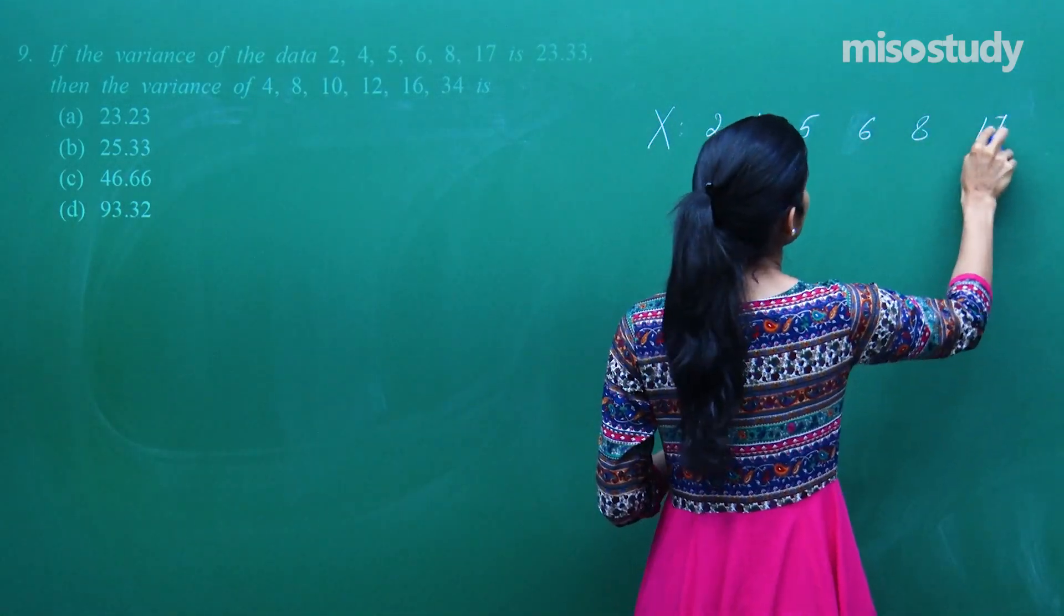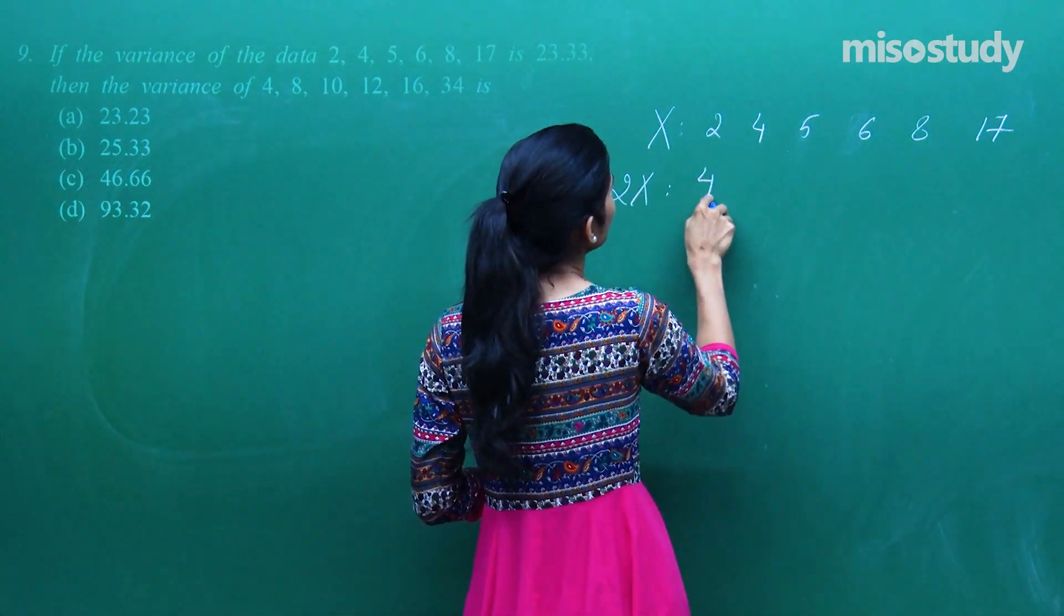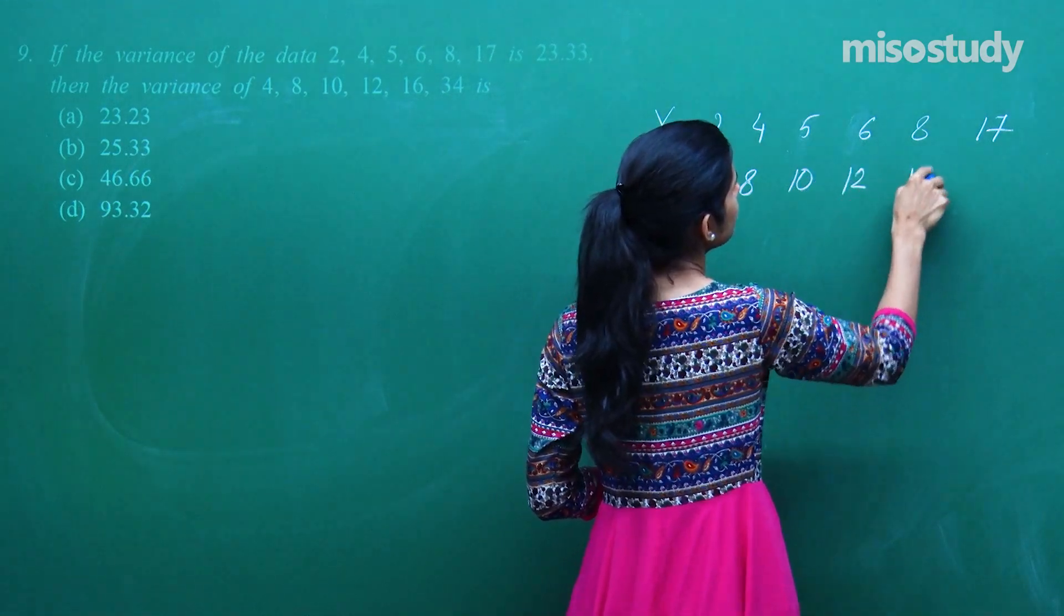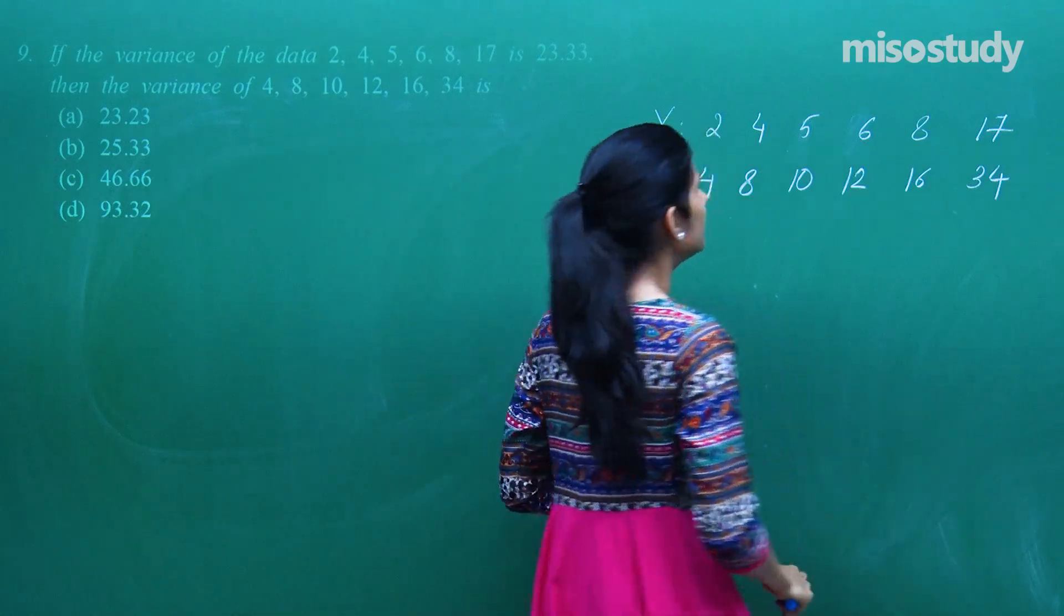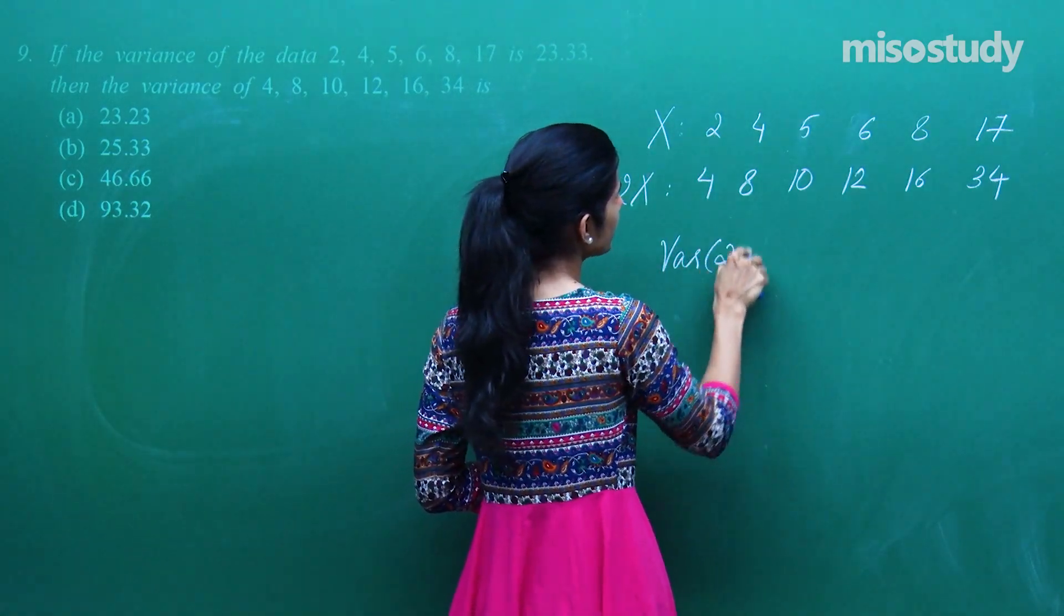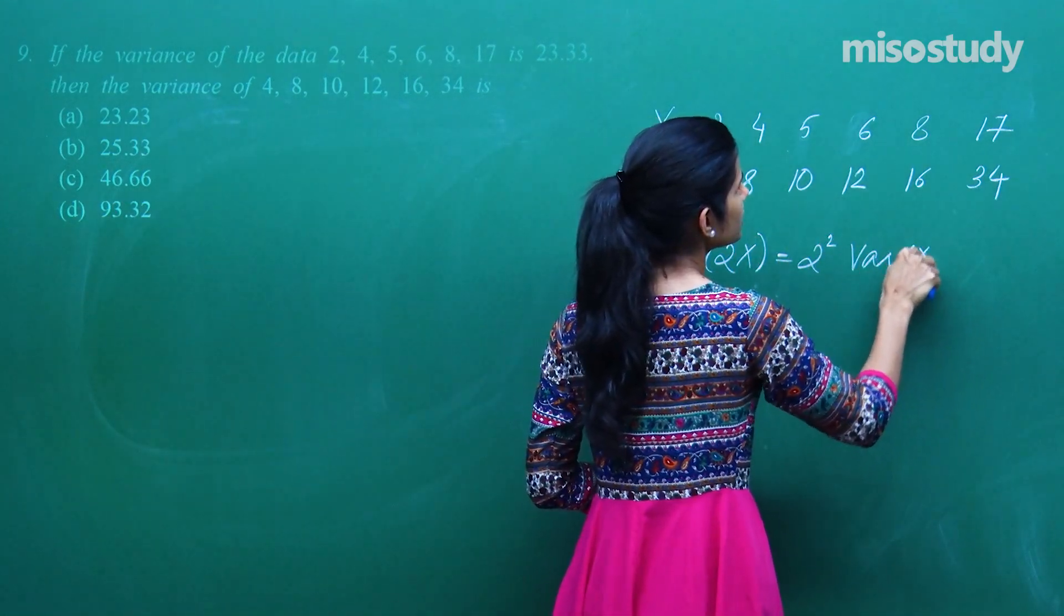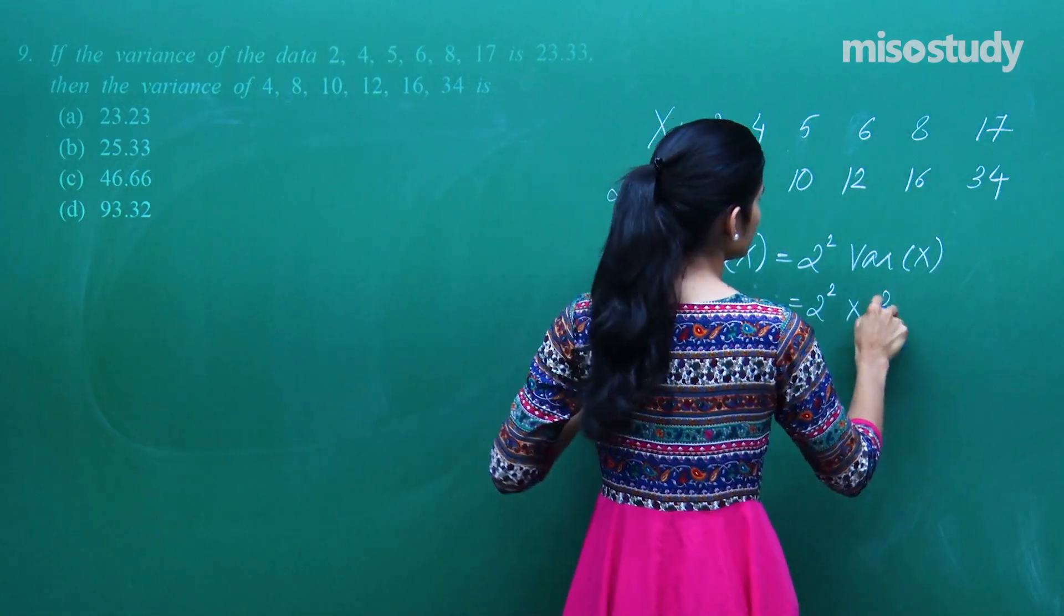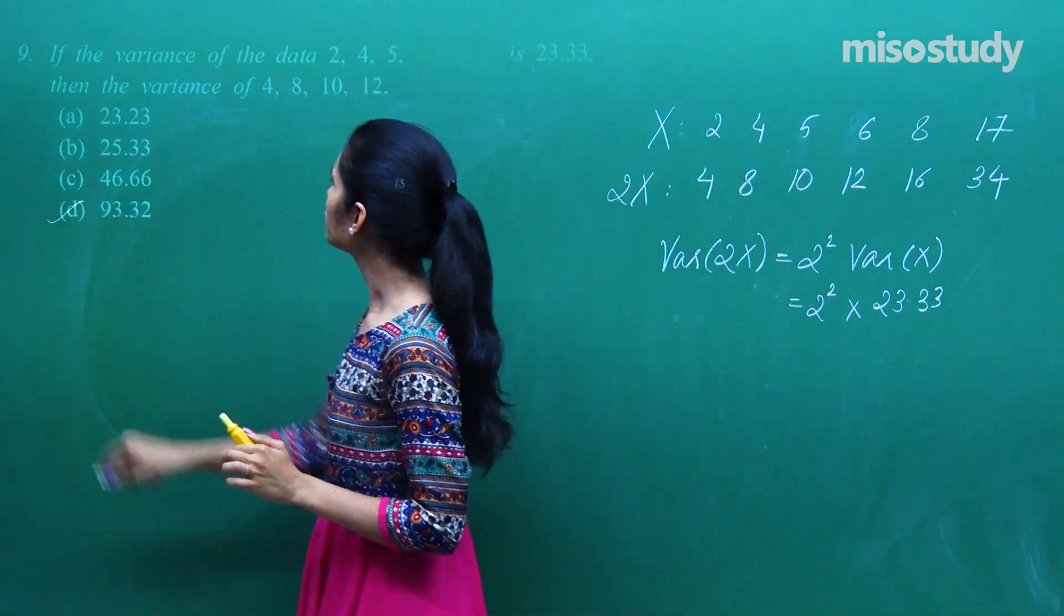2 into 8, 16 and this is 34 which are written over here. Thik? Toh kya hoga variance of 2x? Agar ye pata hai toh sab pata hai. It is 2 square times variance of x which is 2 square times variance of capital X diya hua hai 23.33 and this comes out to be 93.32. This is the variance of 4, 8, 10, 12, 16, 34 data.